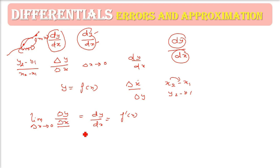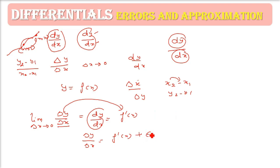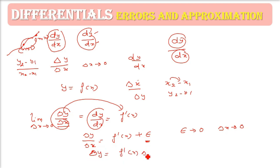So delta y by delta x is nothing but f'(x). When we write delta y by delta x, we have to add a very small element — epsilon — which is so small it tends to zero. So delta y equals f'(x) times delta x plus epsilon times delta x. Since epsilon tends to zero, this term can be eliminated. So delta y equals f'(x) times delta x.